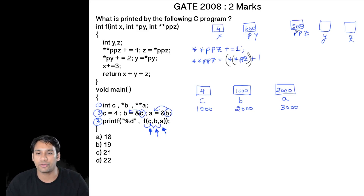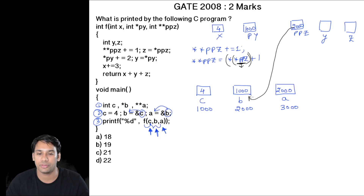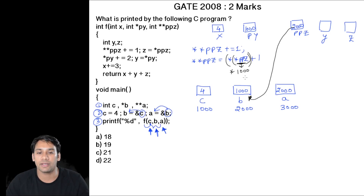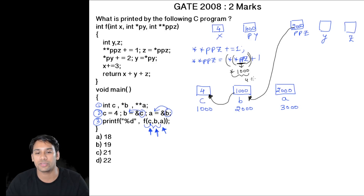The value stored in ppz is 2000, which is an address. Because of this first star, we will go to location 2000 and take the value 1000. So this statement becomes star of 1000. Star of 1000 means we go to location 1000 and take the value. Location 1000 is storing value 4, so this returns 4. So the statement becomes 4 + 1.